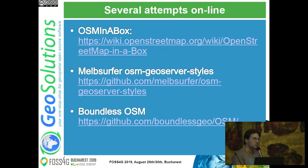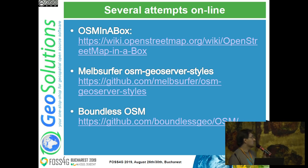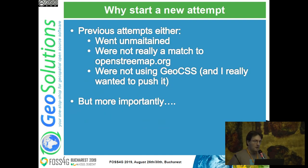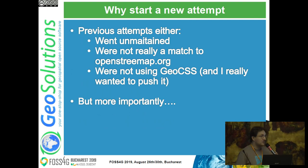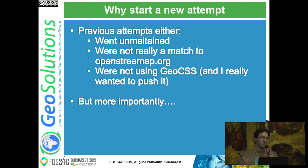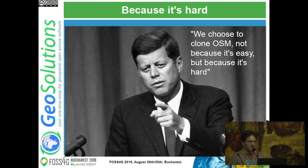So, motivation and history. There were several attempts online to render OpenStreetMap-like maps with GeoServer. One successful one which has been abandoned is OSM-in-a-box; then there is OSM GeoServer styles from Helge Fabregat; there was the Boundless OSM repository. Why did I start a new attempt? Well, the previous attempts either went unmaintained, are not really a match to openstreetmap.org cartography rendering, or are not using GeoCSS - and I'm the GeoCSS maintainer. I wanted something that would push the language forward.